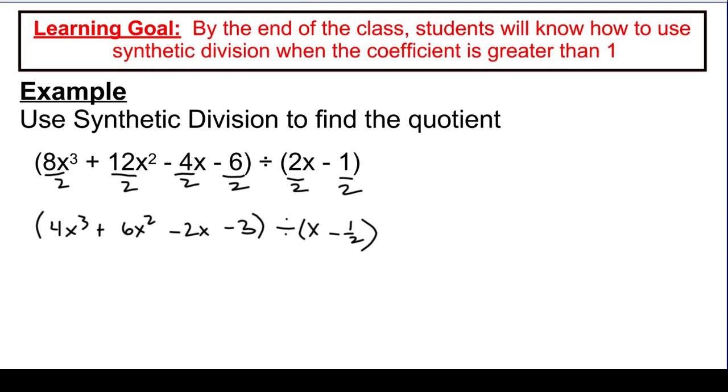So now I can set up my synthetic division like we did before. Here's my synthetic division symbol. Let me fix that line. Synthetic division symbol. And I'm going to say my a value, the value that's going to go out here that I'm going to repeatedly multiply along the problem, is 1/2, right? If I wanted to turn this into a 0, I'd plug in a 1/2 here.